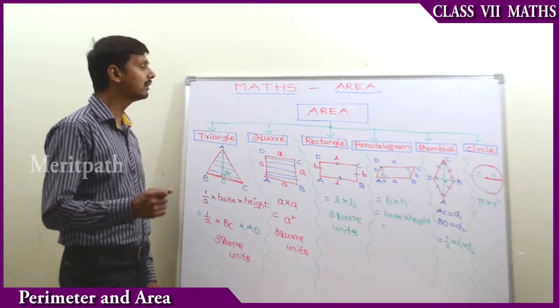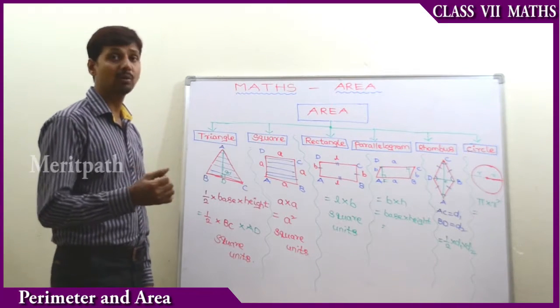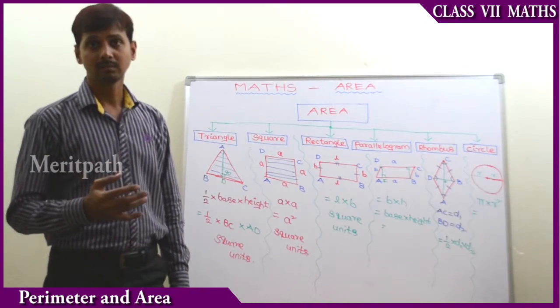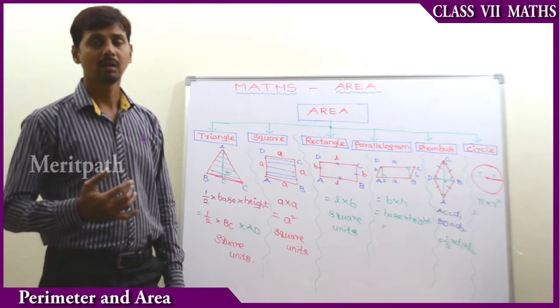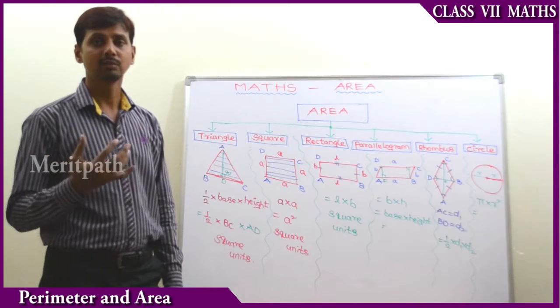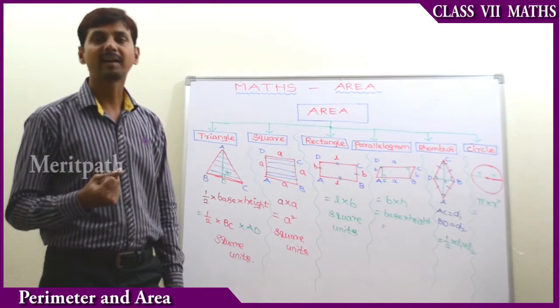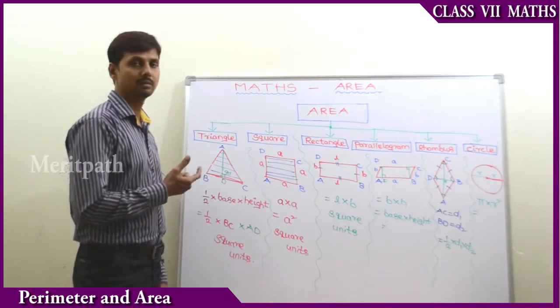So there are triangle, parallelogram, rhombus, and circle. Let's go to the next part and use some examples to find out the area of these figures.